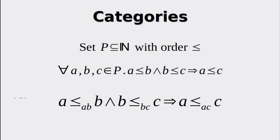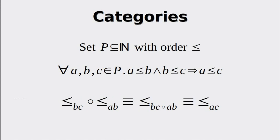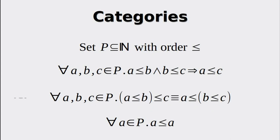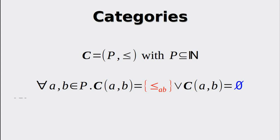Now we can prove that this construction is indeed a category. Interpreting the operators as morphisms or arrows makes it possible to compose these distinct operators and thus create a new morphism equivalent to the morphism we needed to create. The operator is associative and an identity morphism always exists, since every object is smaller or equal to itself. So we have proven that any subset of the natural numbers together with the smaller-or-equals operator is indeed a category.